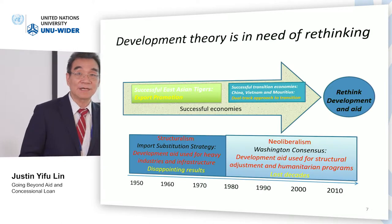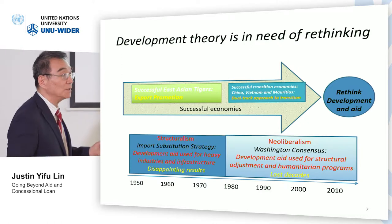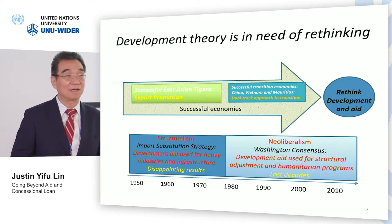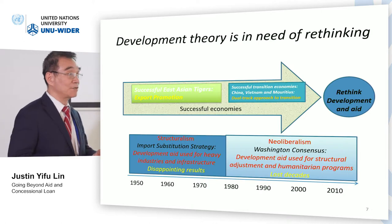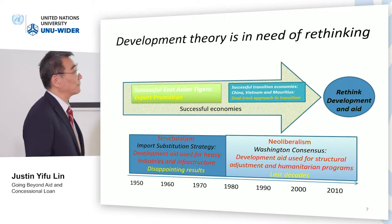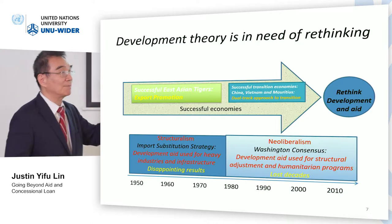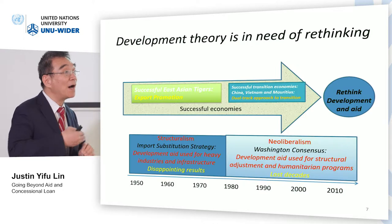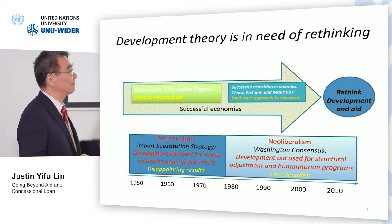Then in the 1980s–1990s, the idea changed to neoliberalism. The argument was that developing countries did not perform well because of market distortions caused by government intervention, and countries were advised to pursue privatization, marketization, and stabilization in order to allow markets to function. Again, countries that followed this approach also performed poorly. During this period, there were a few successful developing economies, and you find their policy frameworks were considered wrong by mainstream ideas.